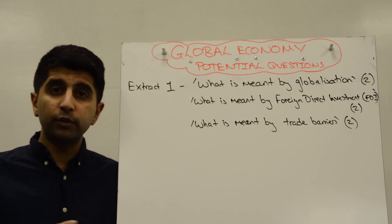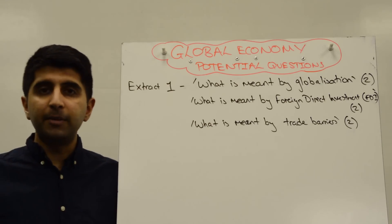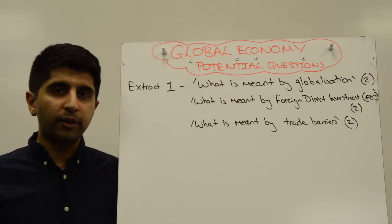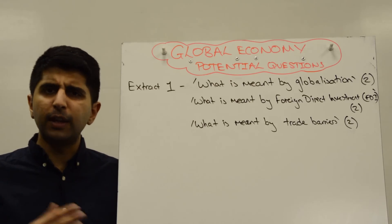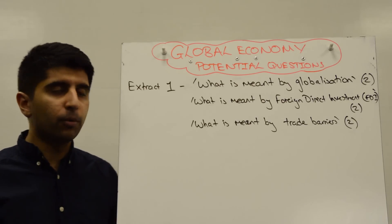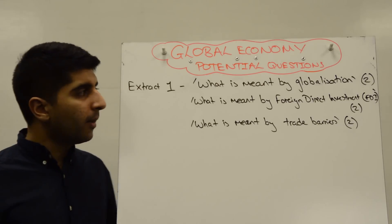A quota - a quantity limit on imports, domestic subsidies, administrative barriers like red tape, like product standards, like environmental standards. You give those examples. You might want to talk about an embargo, which is a ban on imports, and then you've hit your two marks.